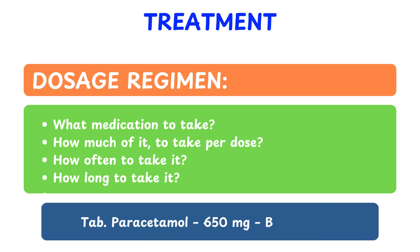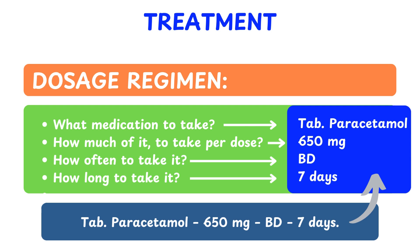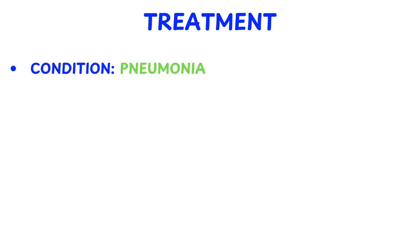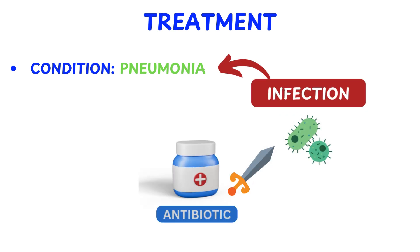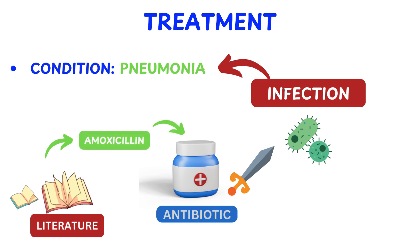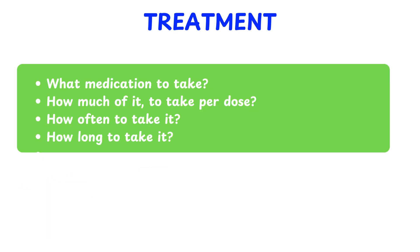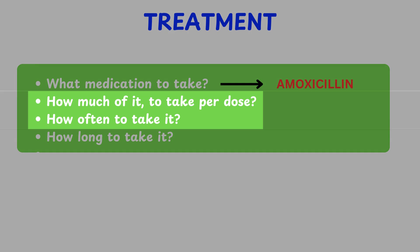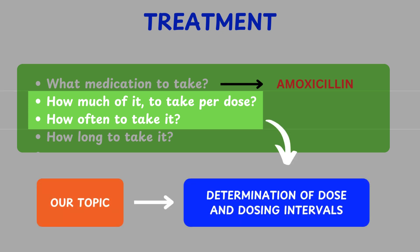Here's a simple example: tablet paracetamol, 650 mg, twice daily (BD), for 7 days. Now, let's apply this to the pneumonia case. We know pneumonia is an infection, so we need to administer an antibiotic. By referring to literature or treatment guidelines, we learn that amoxicillin is an appropriate choice. With this, we've answered our first question — what medication to take? Next, we move to the second and third questions: what dose should be given, and how often should it be administered? These questions form the basis of our topic: determination of dose and dosing intervals.